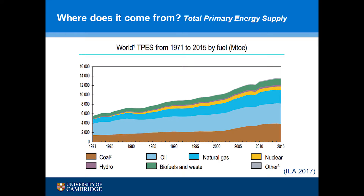So where does energy come from? This is a graph of total primary energy supply from the IEA from 1971 to 2015, and as you can see, the majority of energy still comes from fossil fuels. This tiny gray sliver labeled 'other' is renewables, excepting biomass and hydro. So we still have a long way to go.